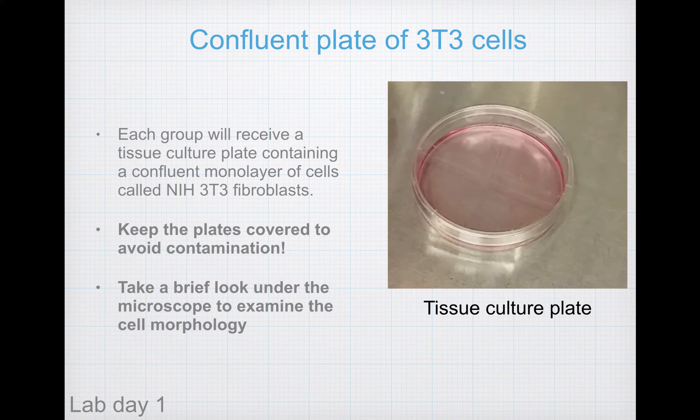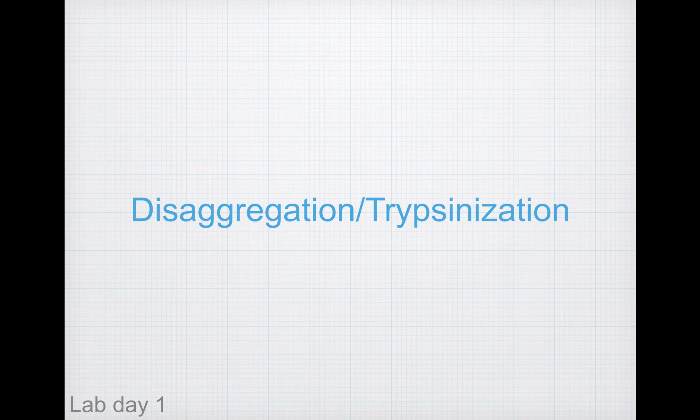Now you'll be ready for the next phase: disaggregation. The aim is to reseed the cells in a different vessel. To do so, you have to detach the monolayer in the current vessel and transfer them to a new vessel. For this, we add a compound called trypsin — once added, the cells are called trypsinized. Trypsin breaks down the proteins which enable cell adherence to the vessel. First, retrieve warmed media and warm trypsin from the water bath, and remember to spray the outside of these containers with alcohol solution before placing them in the hood.